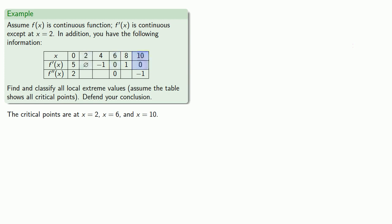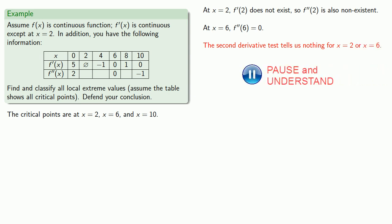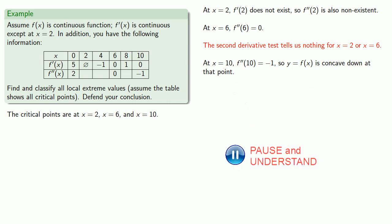Let's take a look at our second derivative. At x equals 2, the first derivative does not exist, so the second derivative does not exist, and the second derivative test tells us nothing for x equals 2. At x equals 6, the second derivative is zero, so again the second derivative tells us nothing. At our third critical point, x equals 10, the second derivative is negative 1, so y equals f(x) is concave down at that point, meaning x equals 10 corresponds to a local maximum value.